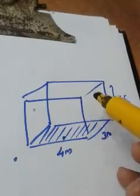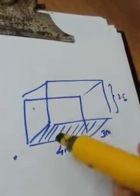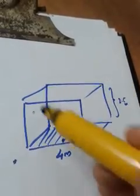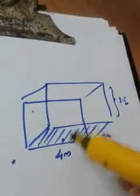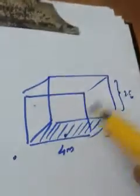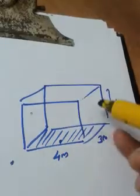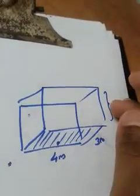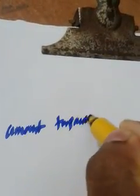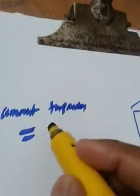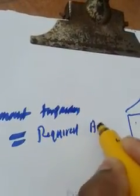This is related to surface area, but we cannot say total surface area because base is excluded. Total surface area includes the base, but here we are excluding the base. The amount of tarpaulin required equals the required surface area, because by using tarpaulin we are going to cover all the faces.